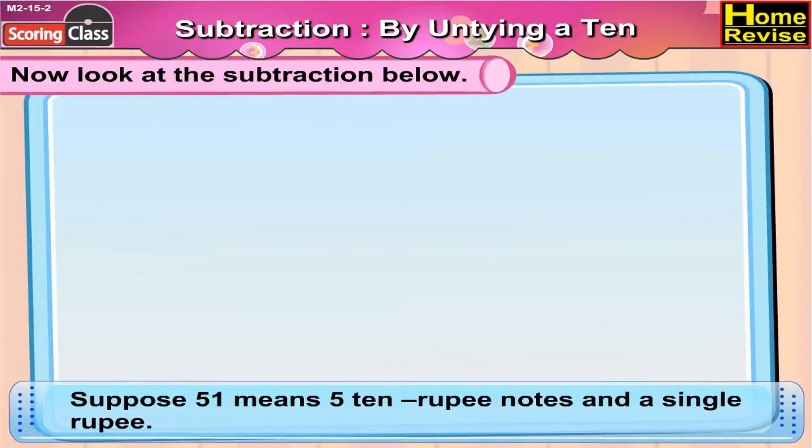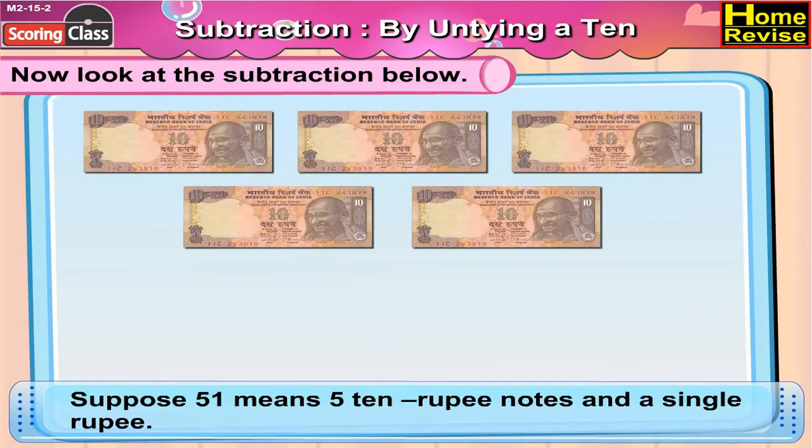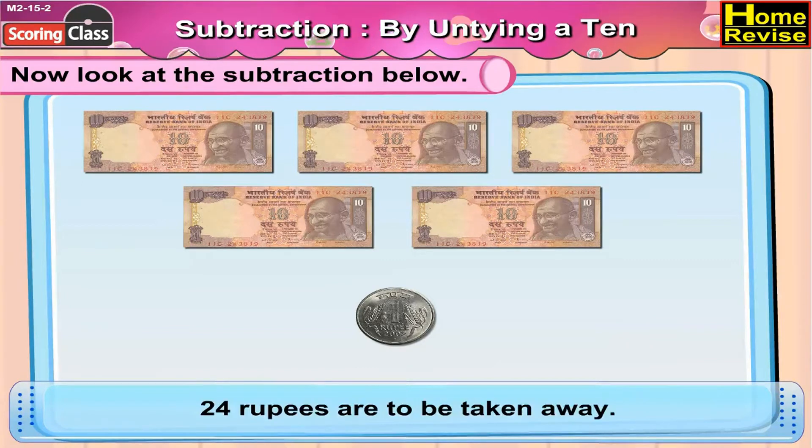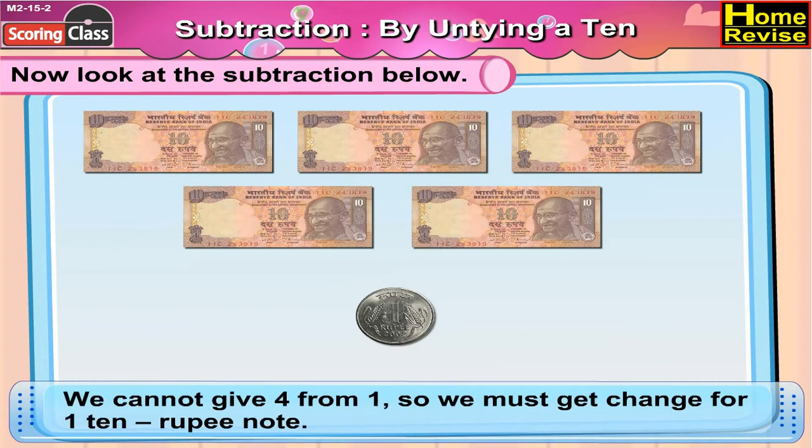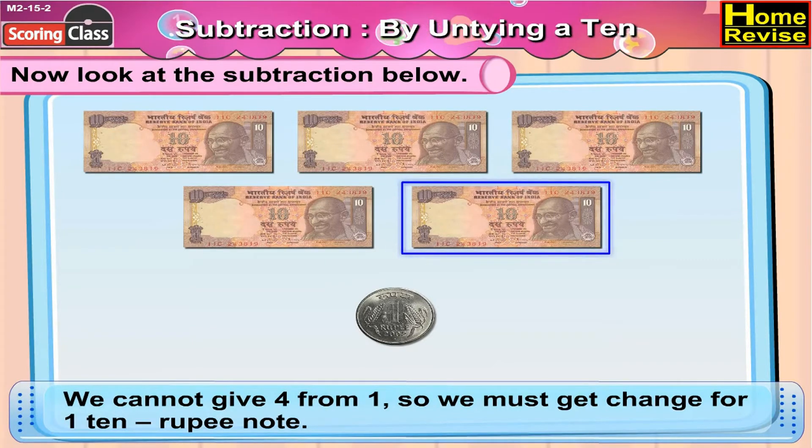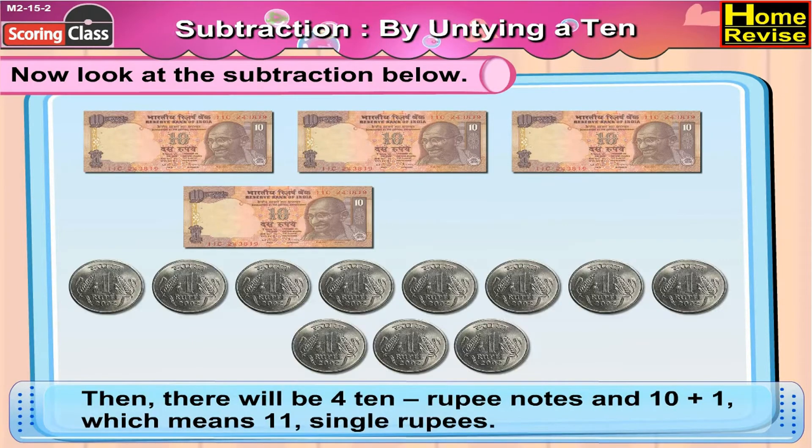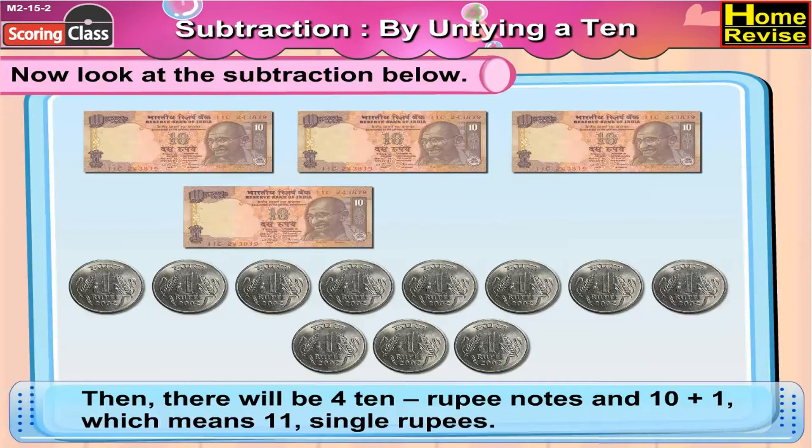Suppose 51 means 5 ten-rupee notes and a single rupee. 24 rupees are to be taken away. As 4 cannot be subtracted from 1, what we can do is get change for a ten-rupee note as ten one-rupee coins. So now we have 4 notes of ten rupees and 11 coins of one rupee.